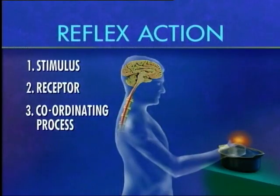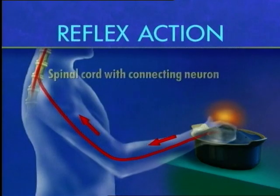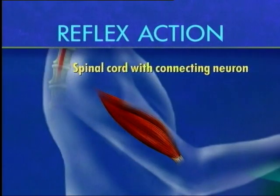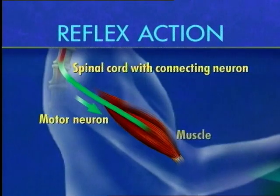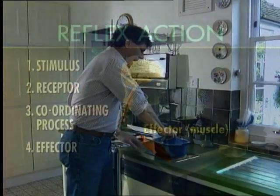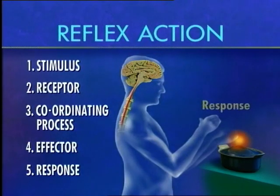Step three is coordination or processing. Sensory neurons pass a message or impulse to an intermediate neuron in the spinal cord, which processes it and generates an outgoing impulse. This travels rapidly along a motor neuron to a muscle. In step four, this muscle, known as an effector, responds to the stimulus. This response is the fifth and final step in the chain.